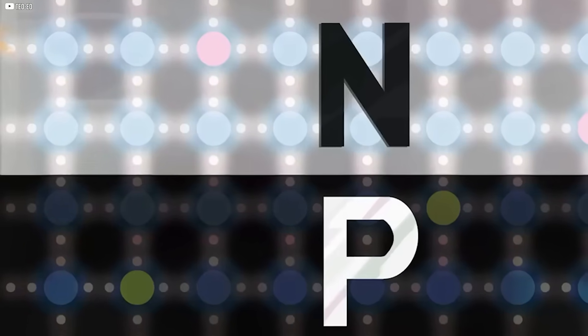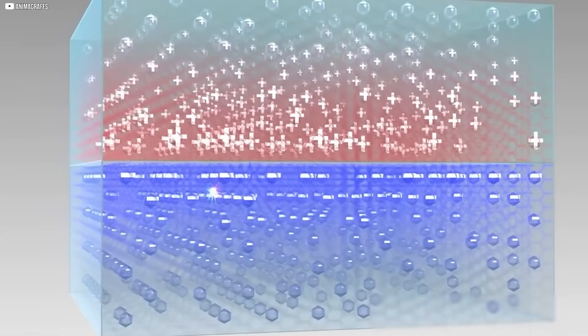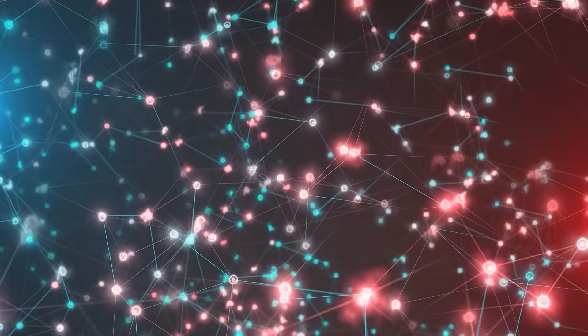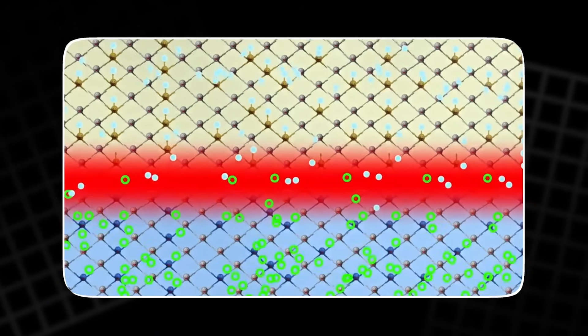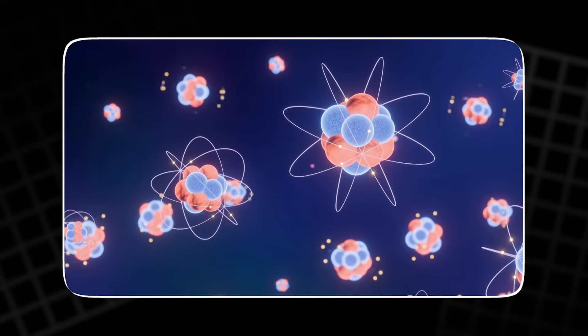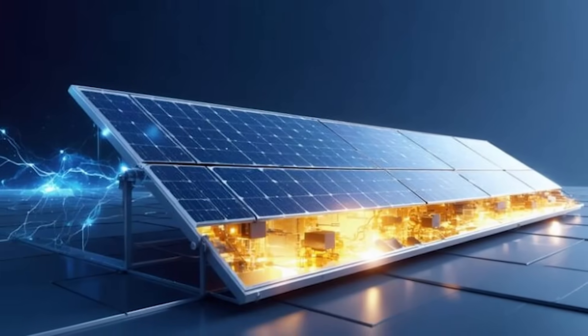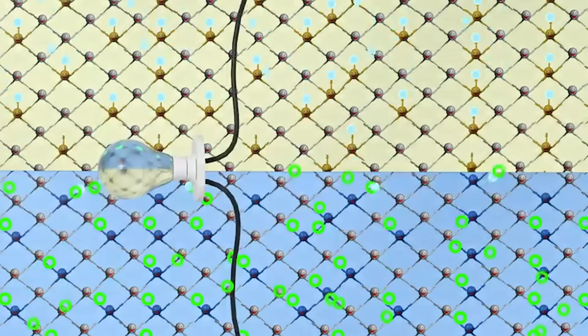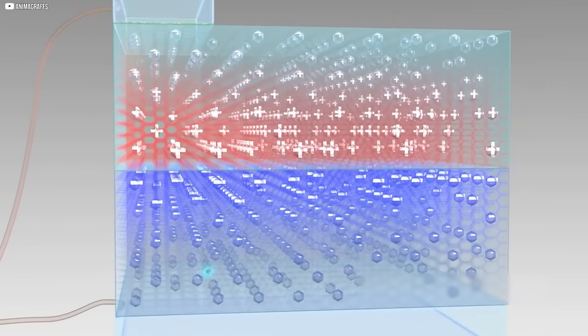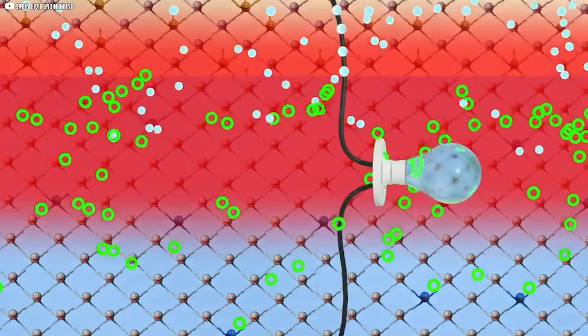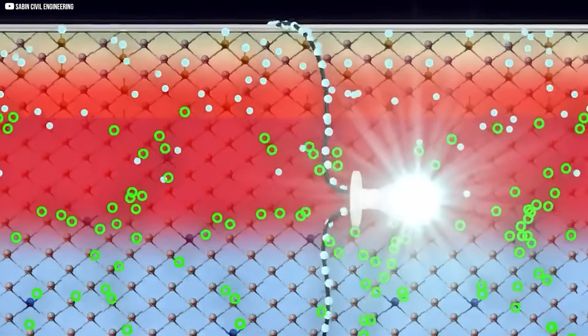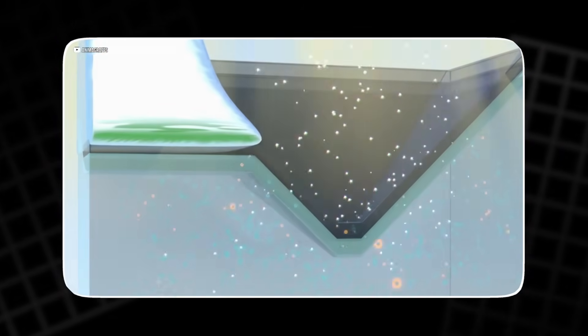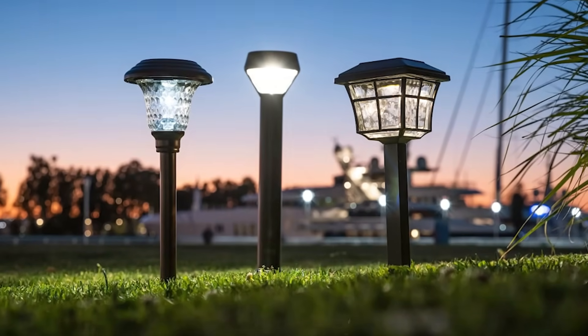Now comes the sunlight. When photons strike the silicon, their energy gets absorbed by electrons in the atoms. That energy is just enough to knock the electrons loose, freeing them from their atomic bonds. But because of the electric field at the p-n junction, these free electrons can't wander aimlessly. They are pushed in one direction toward the front surface of the solar cell. Meanwhile, the holes drift in the opposite direction. If we connect a wire between the top and bottom of the solar cell, we are giving these electrons a path back to reunite with the holes. And as they move along this path, they generate an electric current.